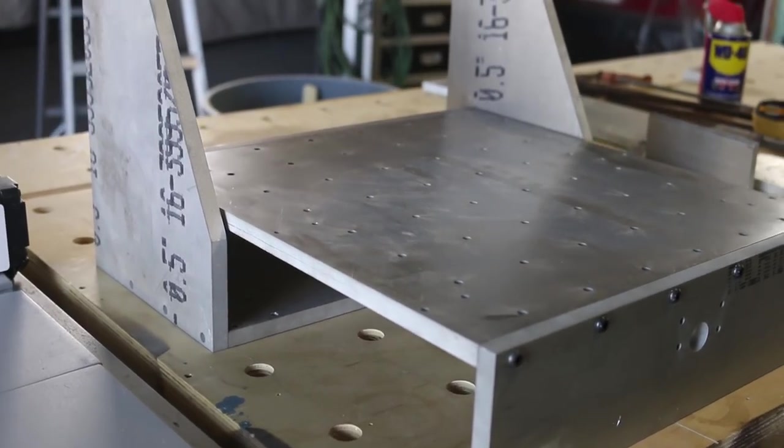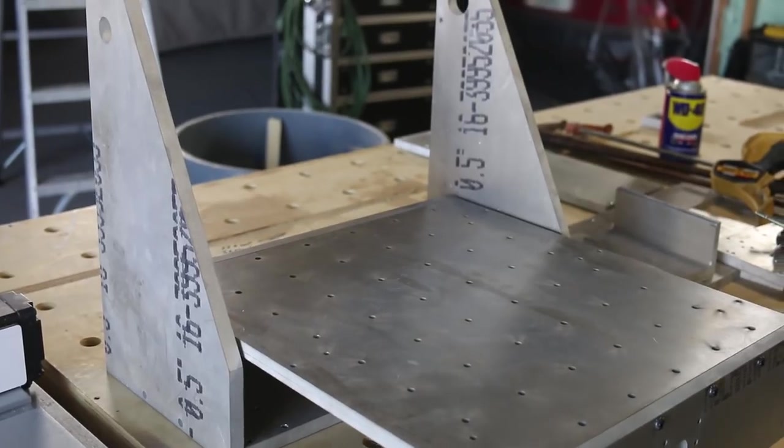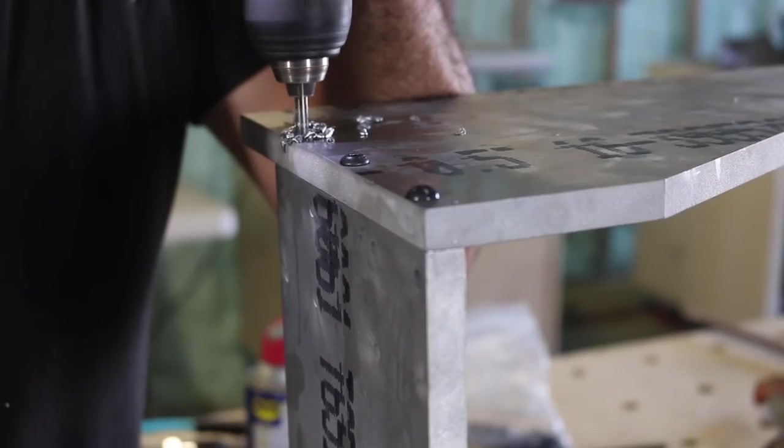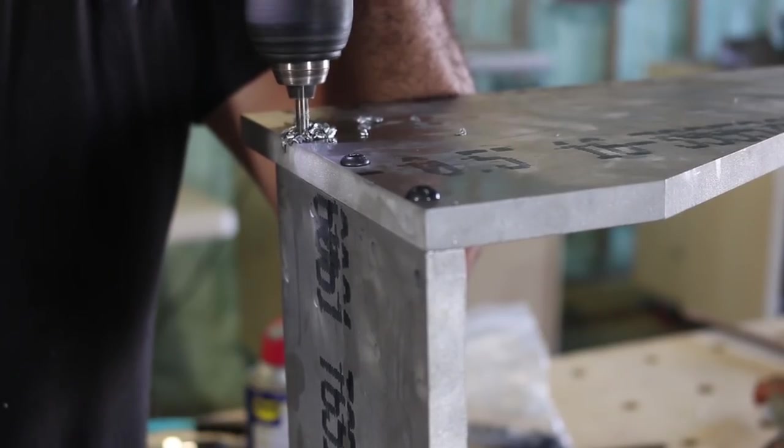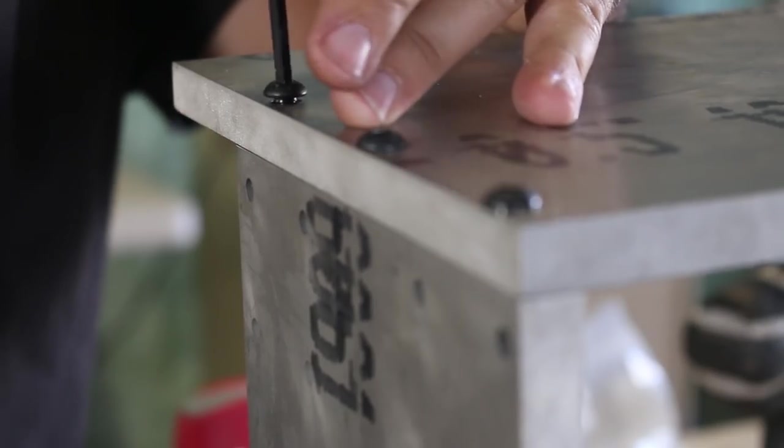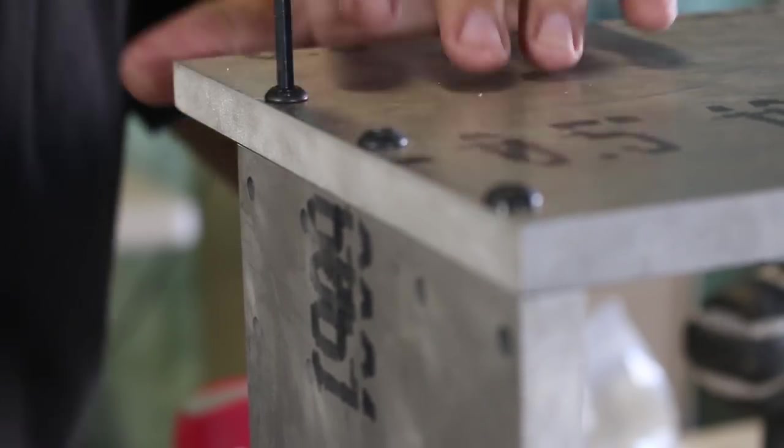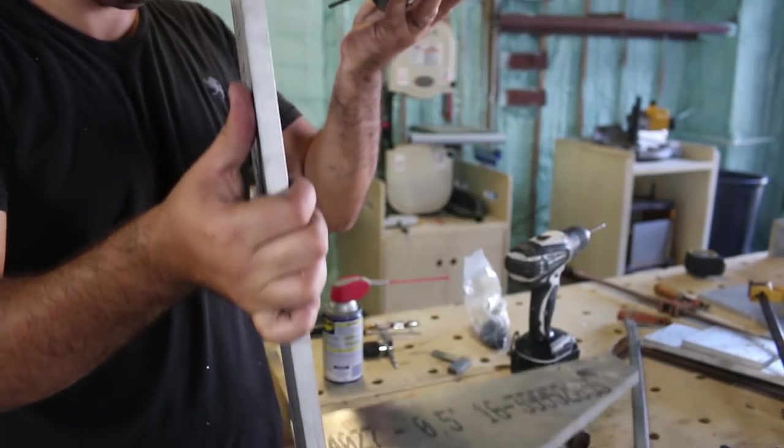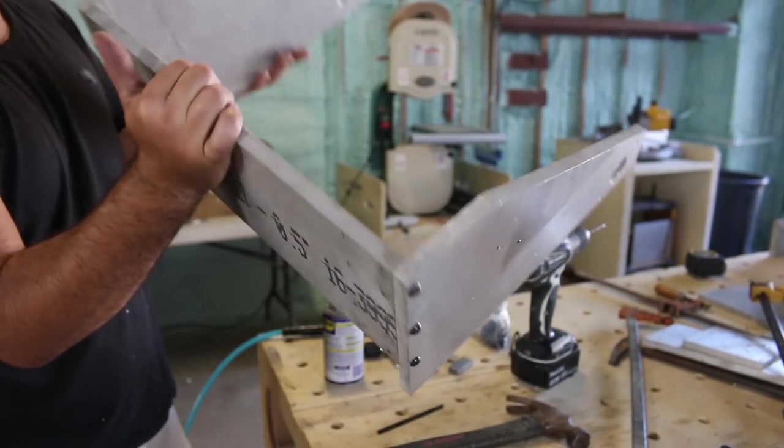All right now we're going to get started assembling the gantry which is basically the same thing. We have to drill holes into the side of the bottom plate I guess we'll call it. Okay. Kind of got a gantry.